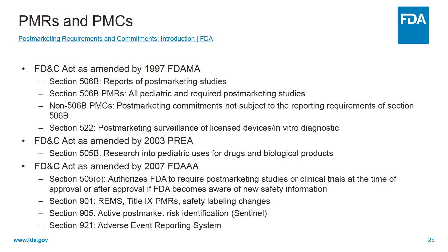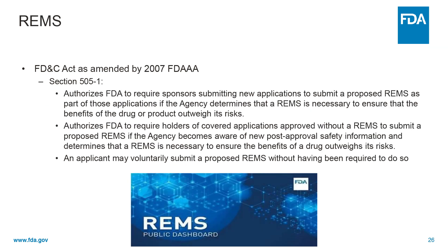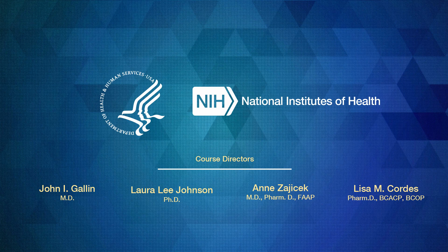The Pediatric Research and Equity Act of 2003 required research into pediatric uses of drugs and biologics. Now, under the FDA Amendments Act of 2007, the FDA can require non-clinical PMRs, also referred to as safety-related product quality studies, clinical studies or trials, REMS, or labeling changes after approval if new safety information becomes available. The FDA conducts active post-marketing pharmacovigilance under the Sentinel System and the Adverse Event Reporting System database. Quarterly reports of any new safety information or potential signals of serious risks identified for products are publicly posted quarterly. FDAAA also authorized the FDA to require REMS to ensure a drug or biological benefit outweighs the risk. The FDA may also require REMS if new safety information becomes available post-approval. At any time, an applicant may voluntarily submit a REMS. This concludes the section on licensing applications for drugs and biologics. Thank you.